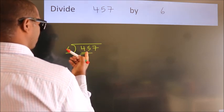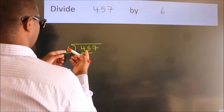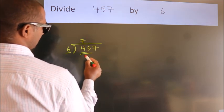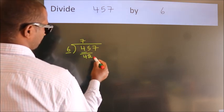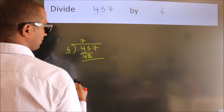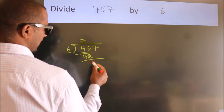A number close to 45 in 6 table is 6 times 7 equals 42. Now, we should subtract. We get 3.